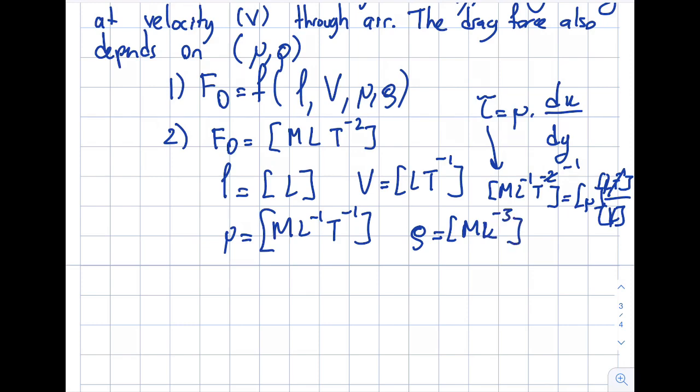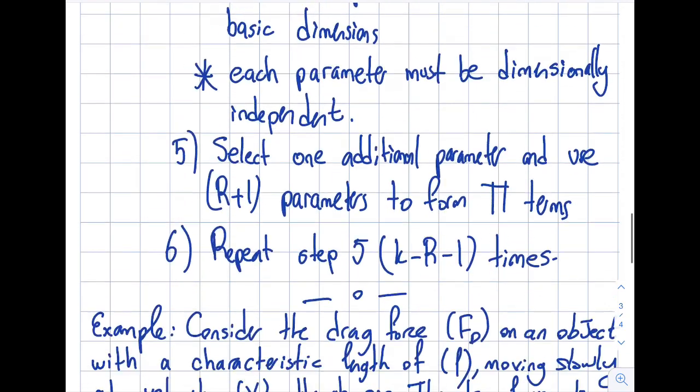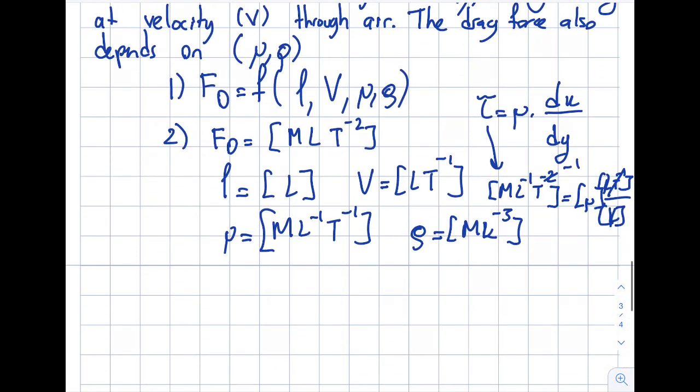Step number 3 asks me, as you can see up here, is identifying the R value. So when I look at the combination of this, you can see right off the bat from the force I do get myself MLT. So then in the third step, my R will be equal to 3, and obviously there will be ML and T.